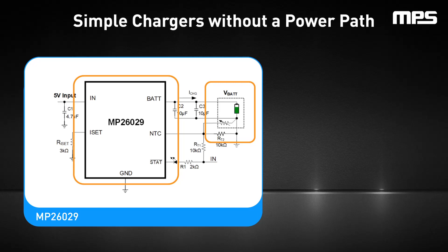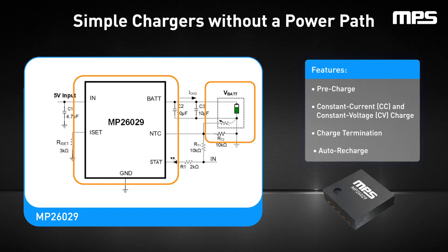The advantages of a simple charger without a power path are its simplicity and lower BOM costs. One example of a simple charger is the MP26029, a single-cell lithium ion or lithium polymer battery charger IC with thermal regulation. The on-chip charging MOSFET works as a fully-featured linear charger with pre-charge, constant current charge, constant voltage charge, charge termination, and auto recharge.